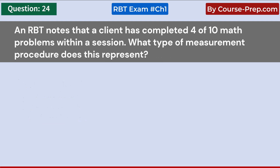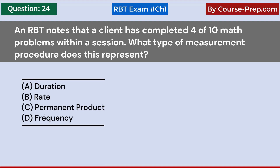An RBT notes that a client has completed 4 of 10 math problems within a session. What type of measurement procedure does this represent? A. Duration. B. Rate. C. Permanent product. D. Frequency. Answer C: Permanent product.